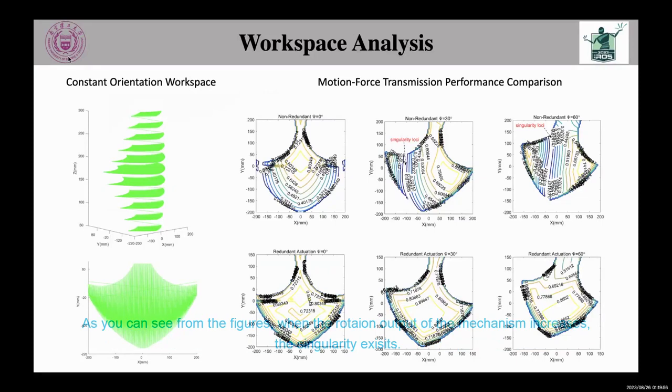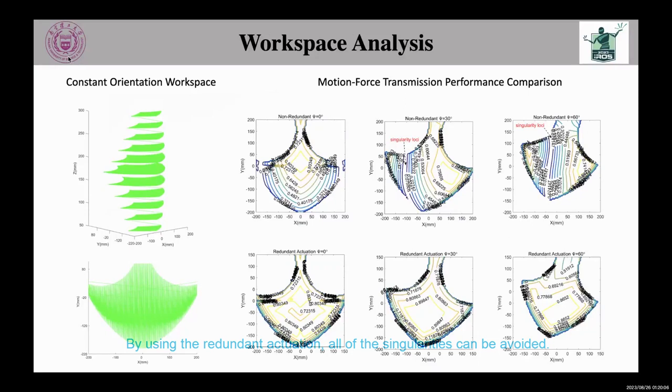As you can see from the figure, when the rotation output of the mechanism increases, the singularity exists. By using redundant actuation, all of the singularities can be avoided.